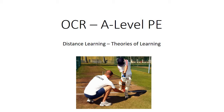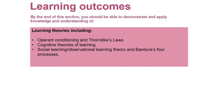So the aims of this lesson or this short video is to look specifically at the different theories around learning. By the end of this section you should be able to demonstrate and apply knowledge and understanding of the following learning theories: operant conditioning and within that Thorndike's laws, the cognitive theories of learning, and finally social learning or observational learning theory by Bandura, which we've talked about in different areas a lot, so hopefully that one's quite familiar to you.